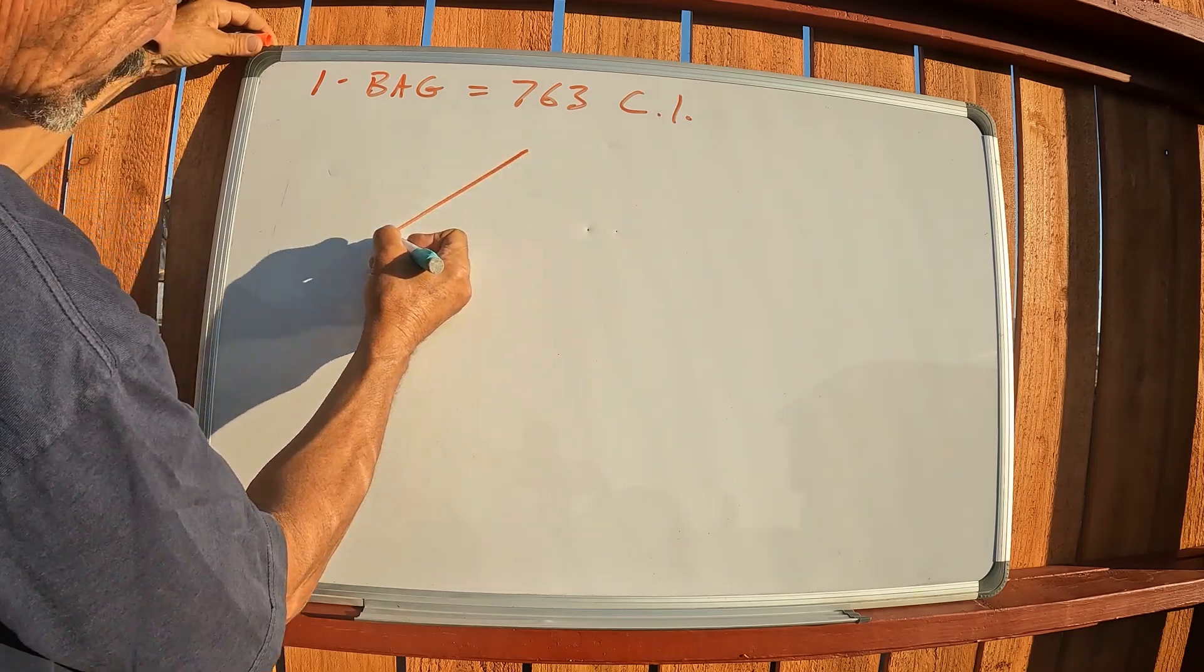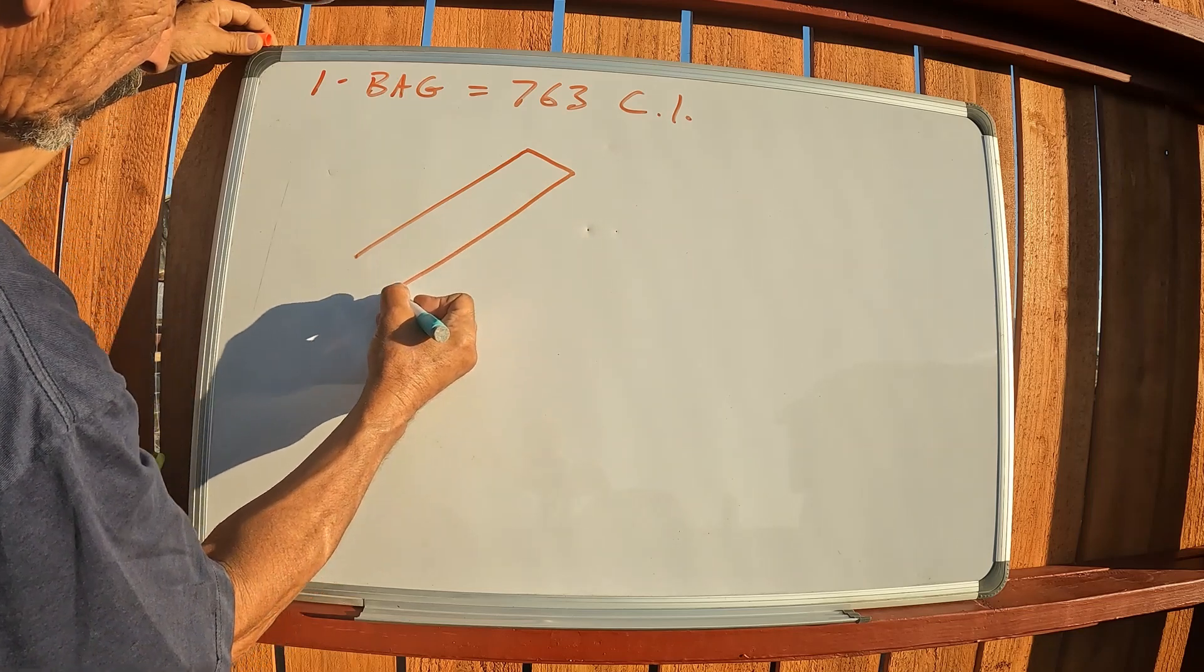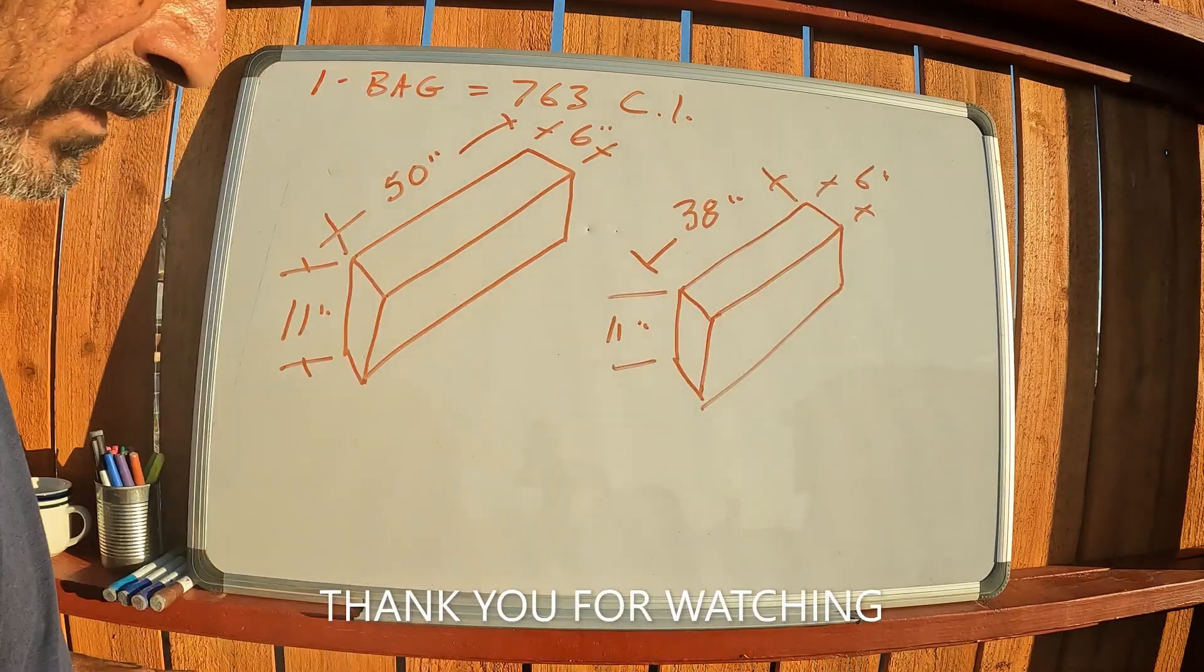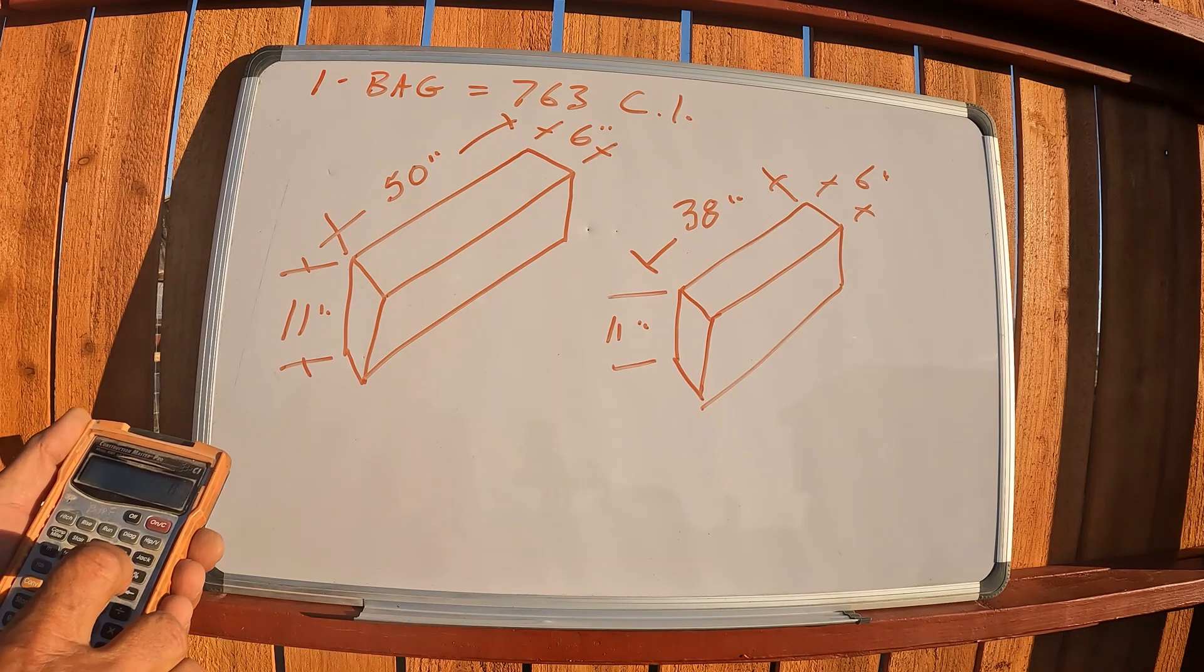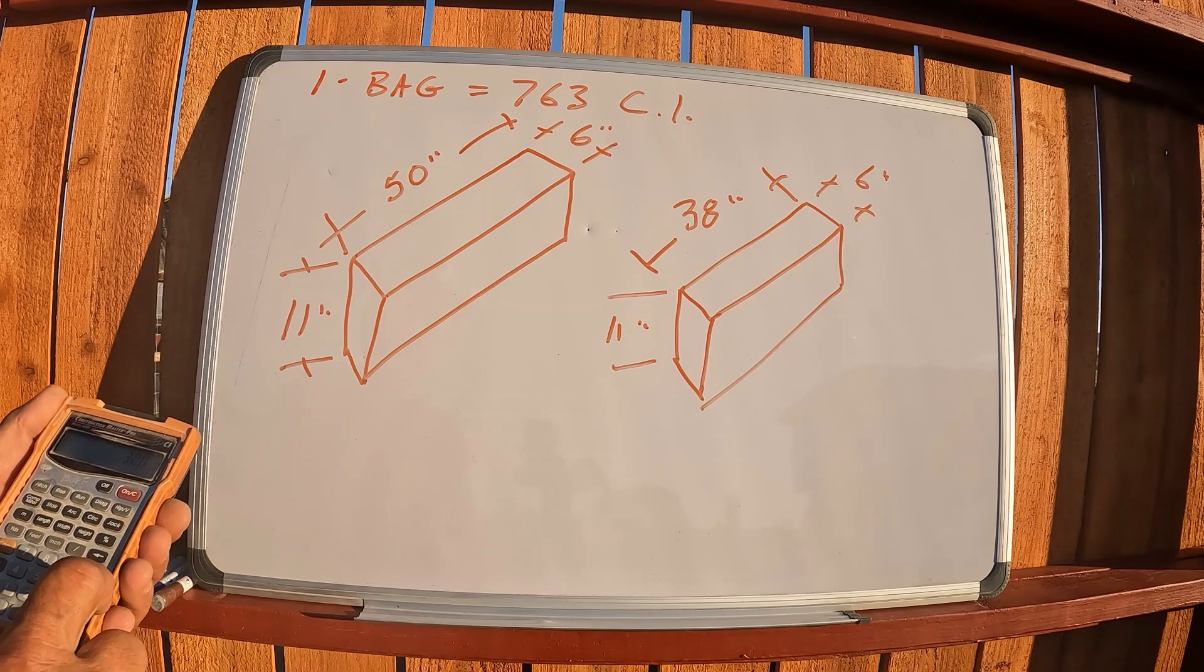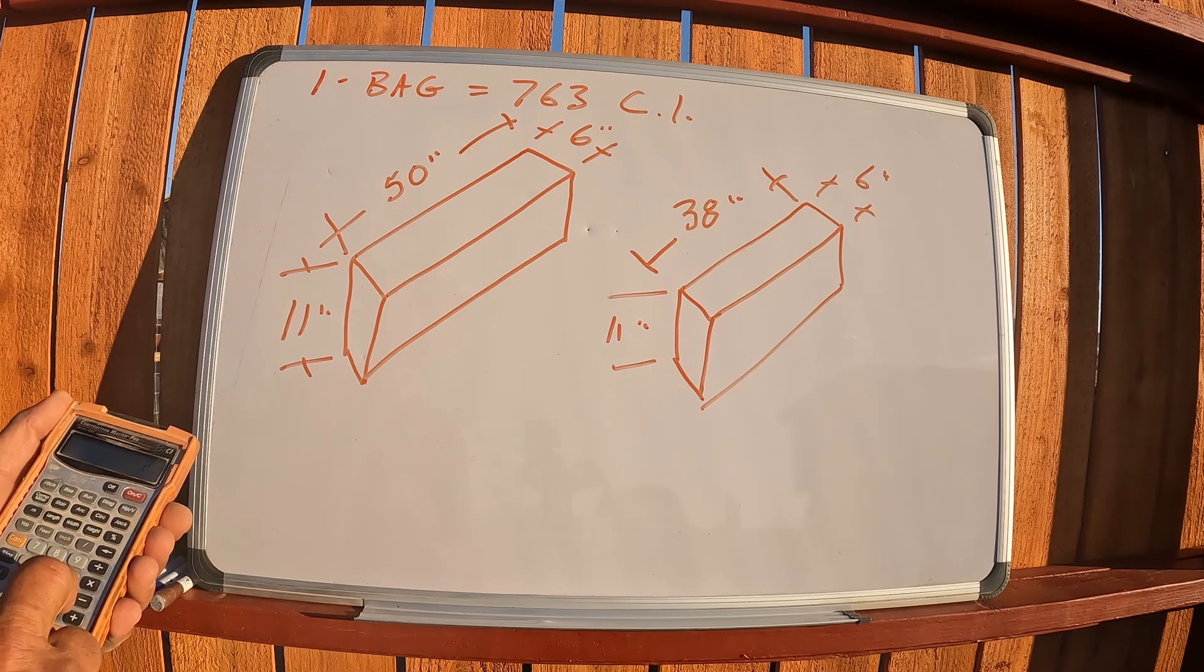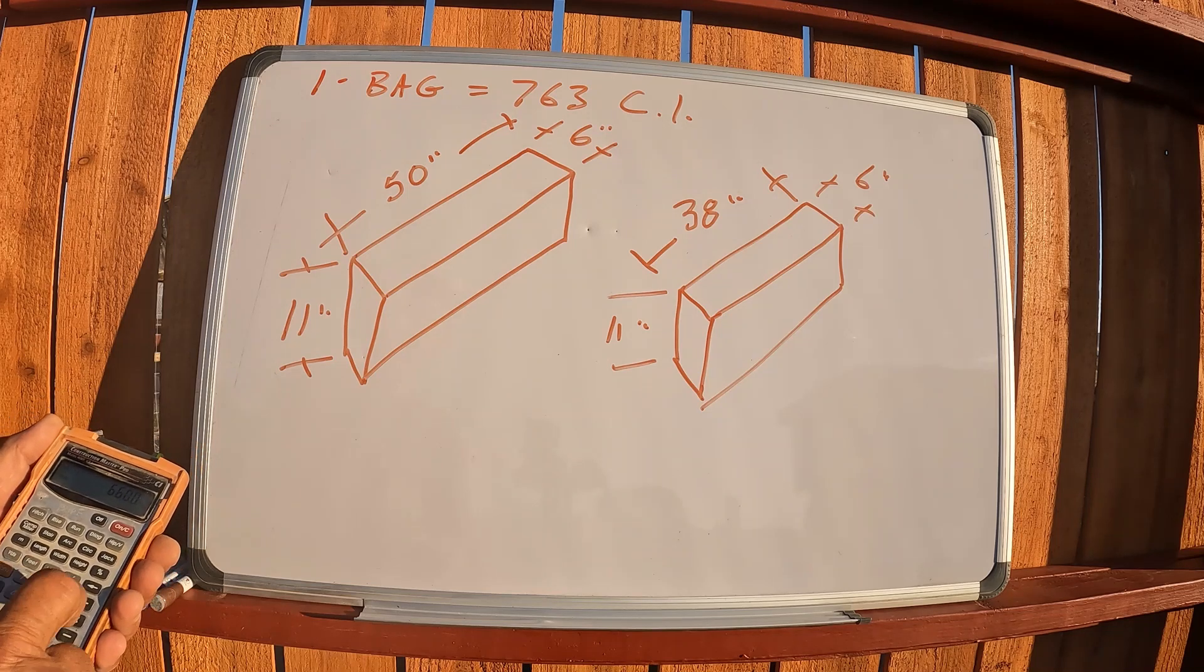What I'm pouring now is, I'll break it down into sections. So from there, 50 times 6 equals 300 times 11 equals 3300 times 2, because there's two sections of each one, 6600 cubic inches on that one.